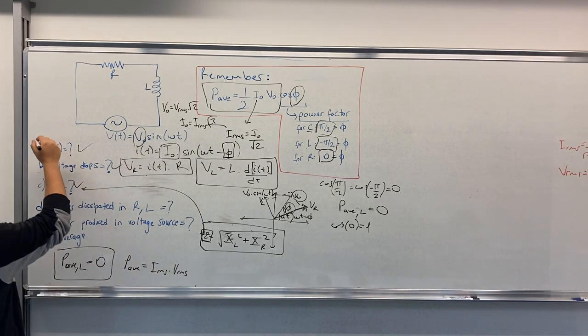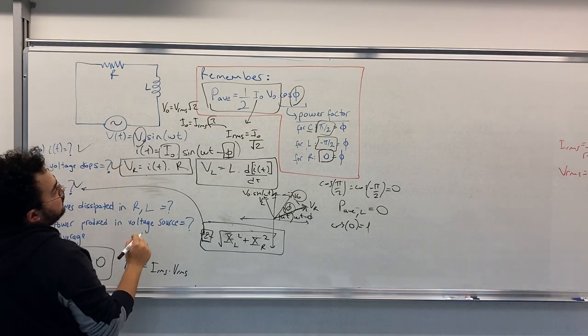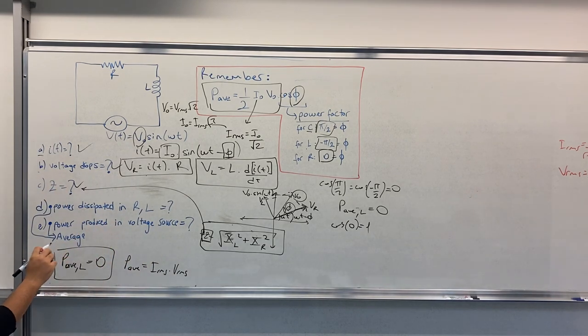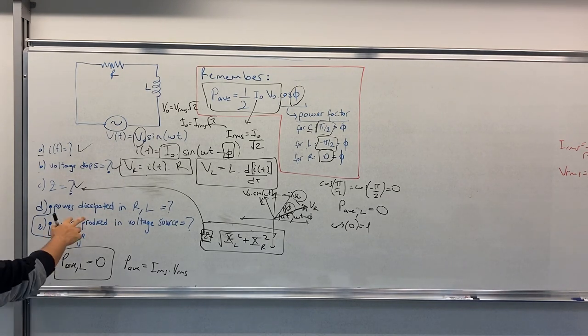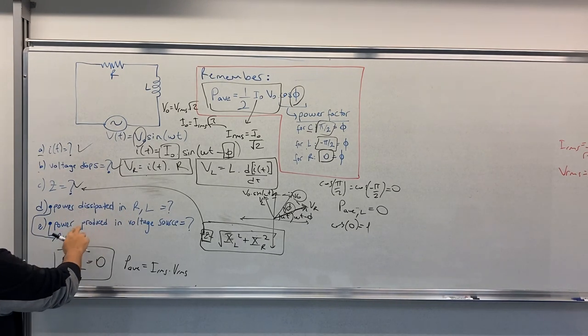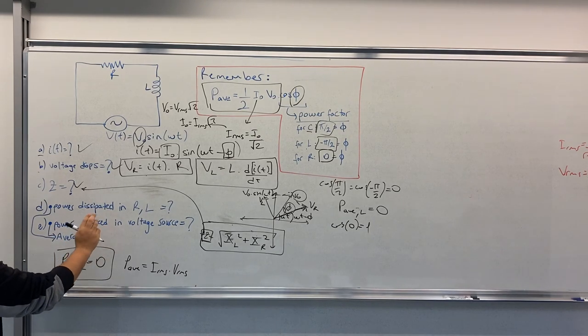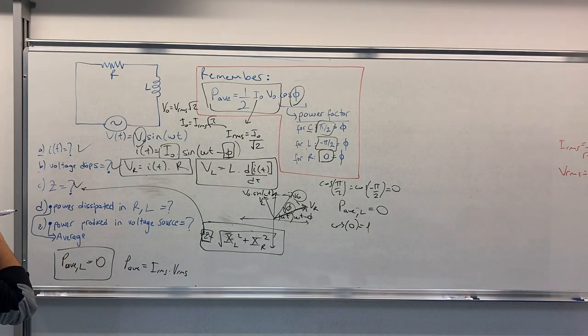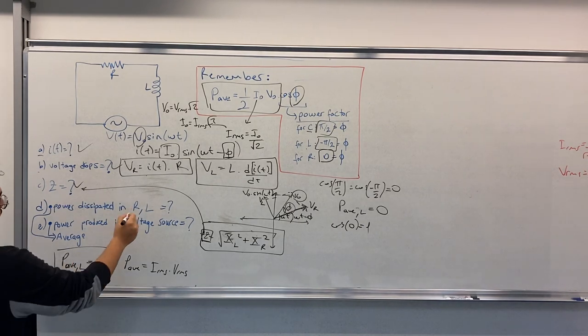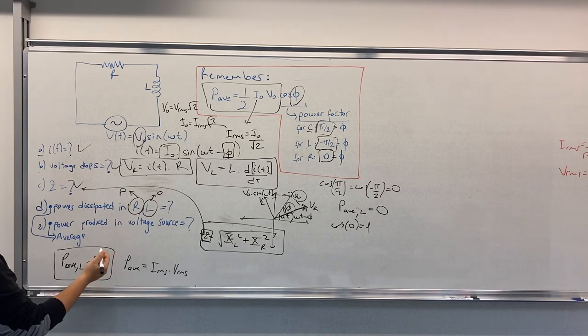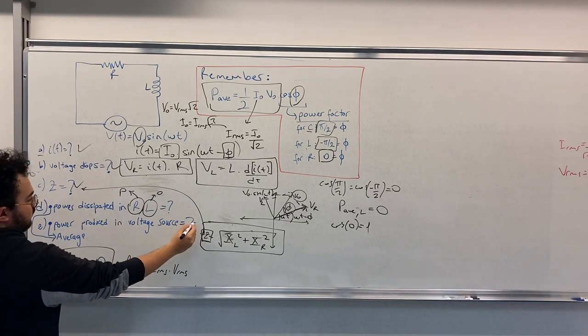This is how you can find the dissipated power. For the power produced in the voltage source, you can just say that the power produced and power dissipated values should be the same. Since this is zero, let's say this power dissipated in R was P. It's just the same, this equals P, because they should be the same.